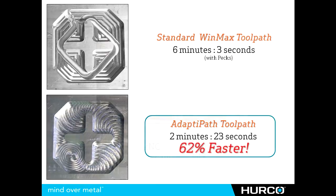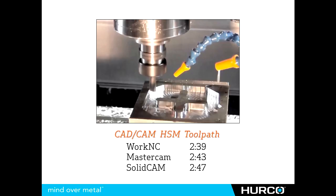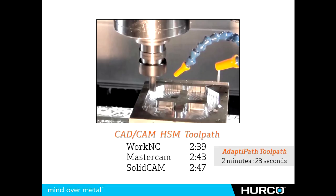Now let's talk about how close the Herco conversational Adaptive Path comes to CAM system high-speed machining algorithms. I sent this test cut to three companies — WorkNC, Mastercam, and Solidcam — and asked them to program it using their high-speed machining systems with the same parameters, same speeds and feeds. You can see that we're within a few seconds of each other. In fact, the conversational Adaptive Path ran just a few seconds faster than any of them did, producing pretty much the exact same tool path.